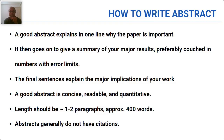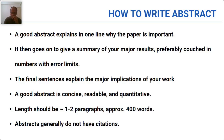First, we start with how to write the abstract. A classic feature of a good abstract is that it explains the entire thesis in a crisp manner. A good abstract explains in one line why the paper is important, then gives a summary of your major results preferably with numbers and error limits. The abstract will have sentences explaining the major implications of your work. A good abstract has three features: it's concise, it's readable, and it's quantitative. Abstracts are typically not more than 400 words and one to two paragraphs. As a golden rule, abstracts will not have citations — it is a very big no.